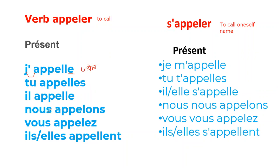Now in the plural: 'nous appelons'. There is a liaison — the 's' and 'a' are pronounced together, giving a 'za' sound: 'nous appelons'. Then 'vous appelez' — the 'z' sound comes here: 'vous appelez'. And finally 'ils appellent', 'elles appellent' — because the -e and -t are silent. So again: j'appelle, tu appelles, il appelle, elle appelle, nous appelons, vous appelez, ils appellent, elles appellent.